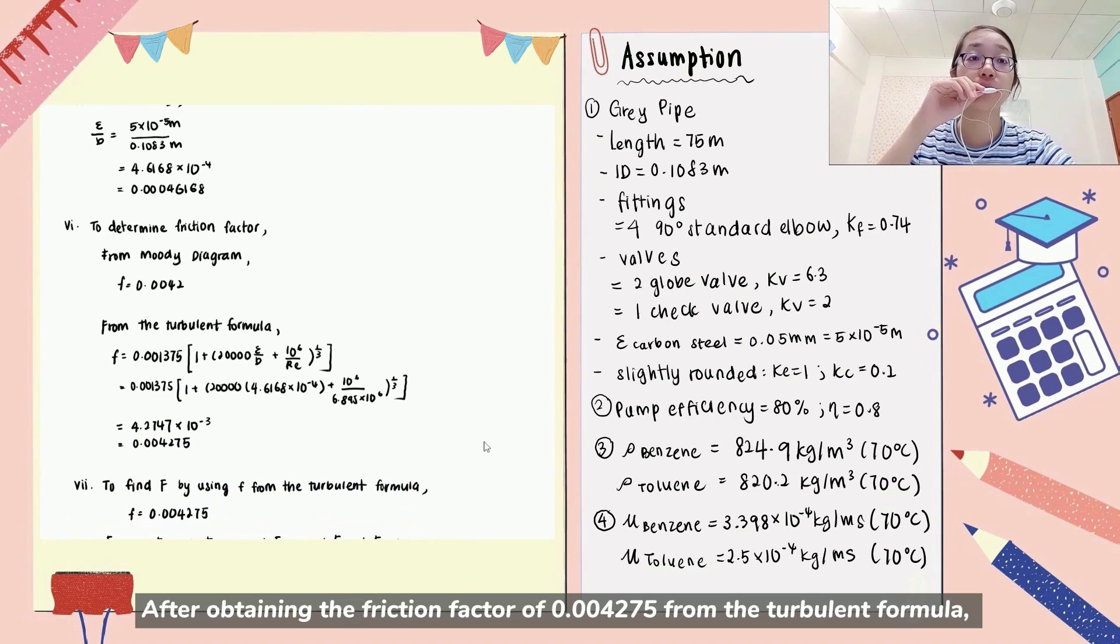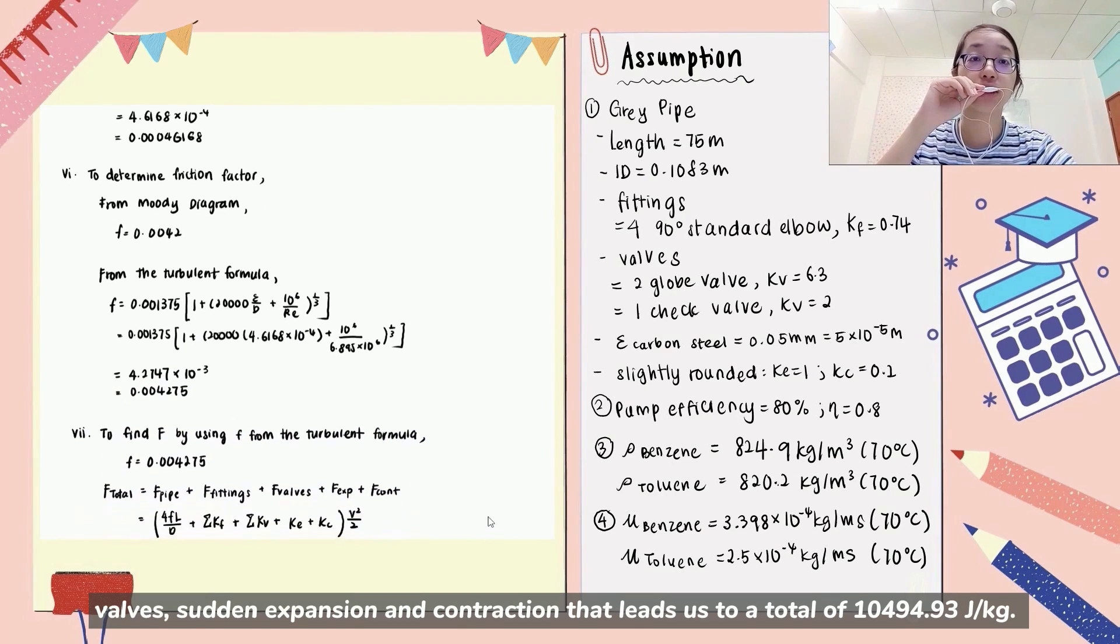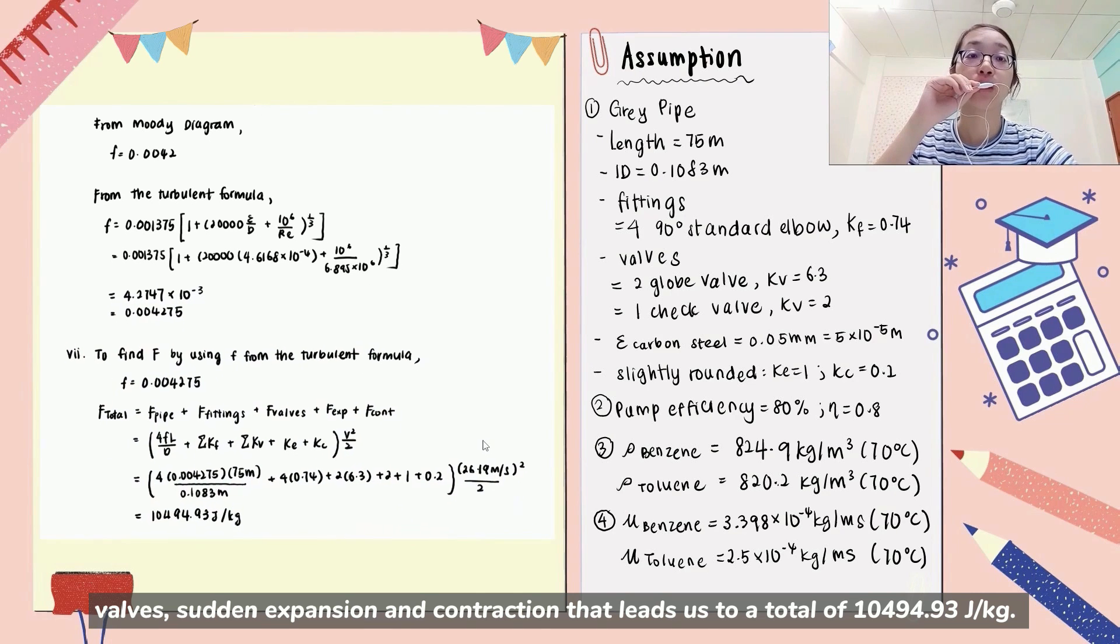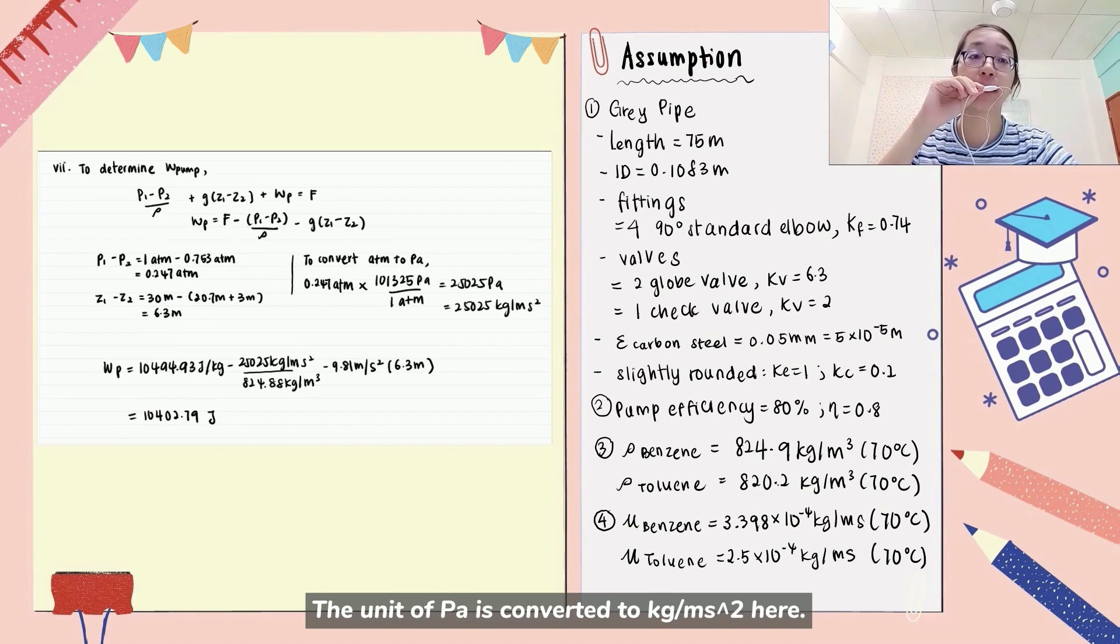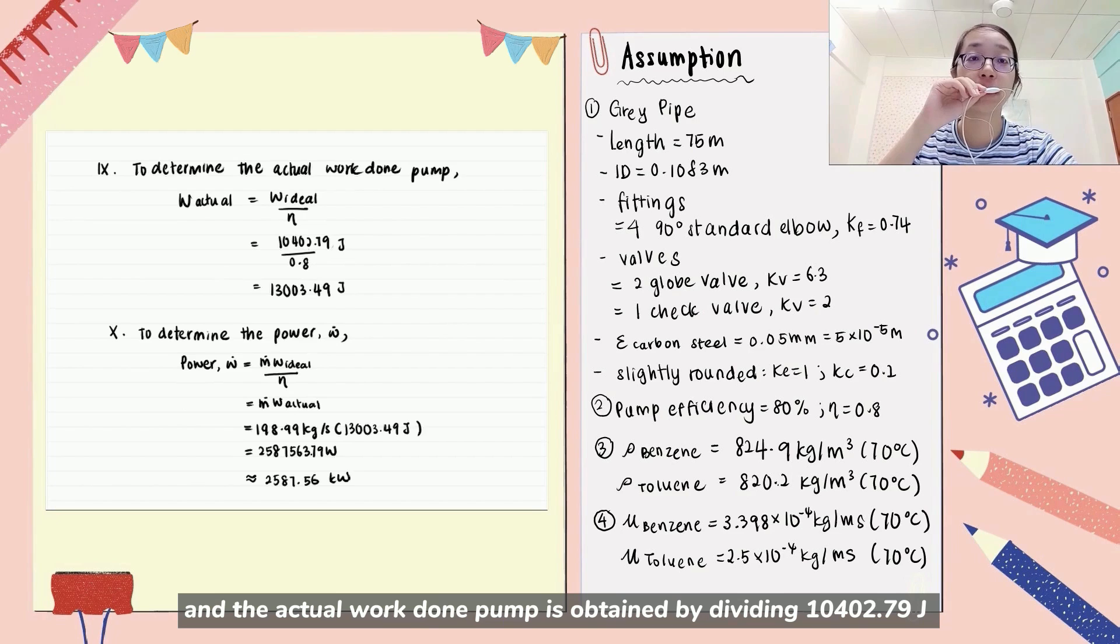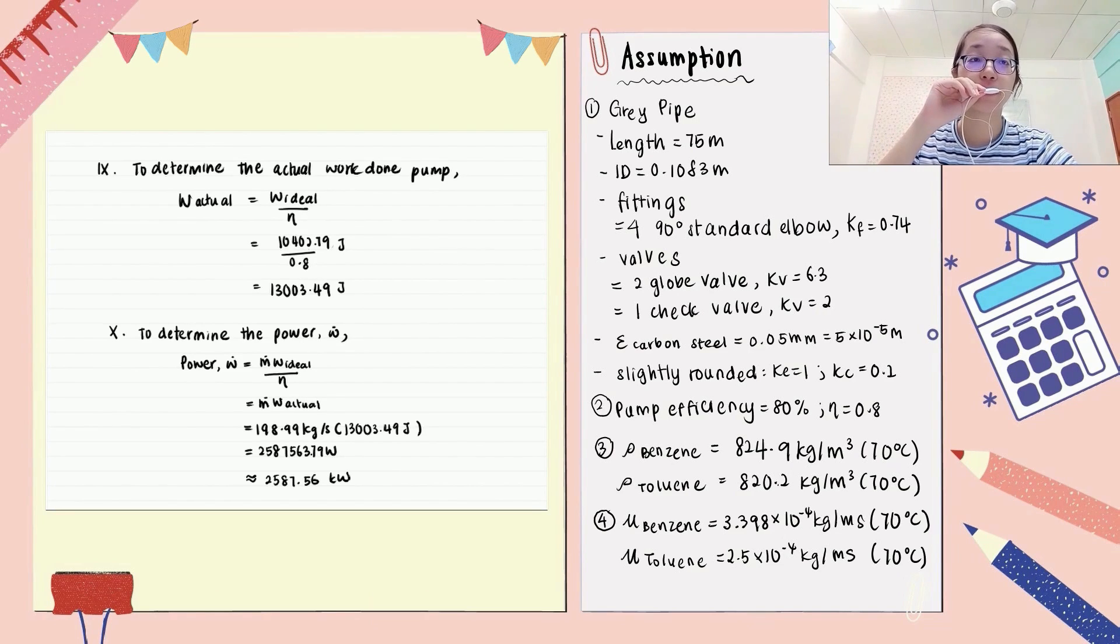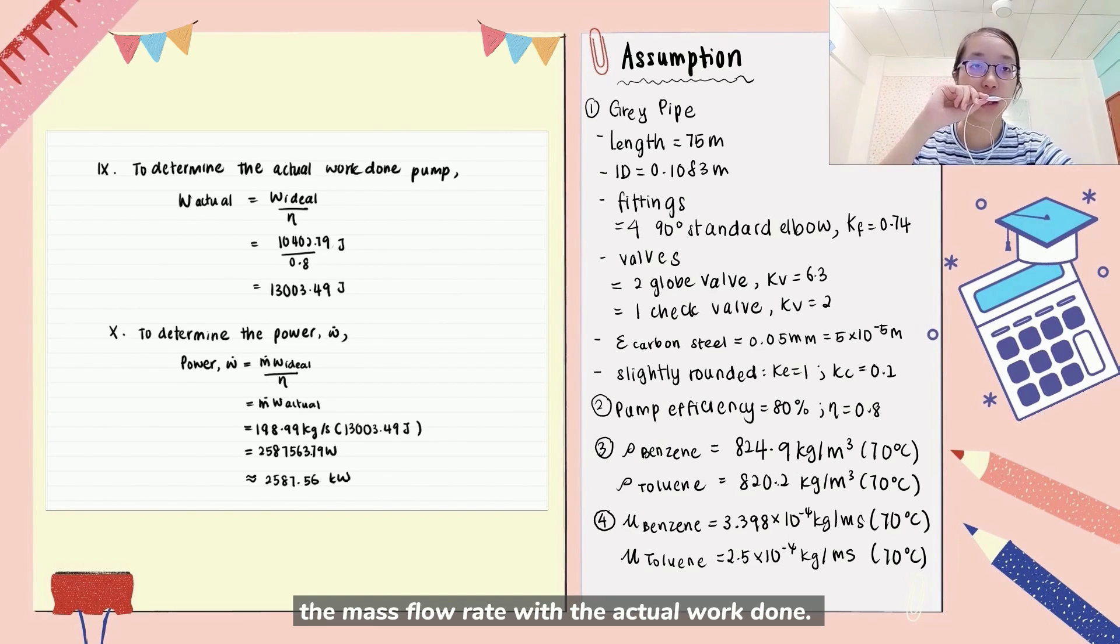After obtaining the friction factor of 0.004275 from the turbulent formula, we can apply in the total friction by adding up the friction of pipe, fittings, valves, sudden expansion and contraction that lead us to a total of 10494.93 Joules per kg. The unit of Pascal is converted to kg per meter second square here. To determine the work of pump, simplified Bernoulli equation is used and the actual work of pump is calculated by dividing 10402.79 Joules with the pump efficiency of 0.8. Lastly, the power of 2587.56 kW can be determined by multiplying the mass flow rate by using the actual work.